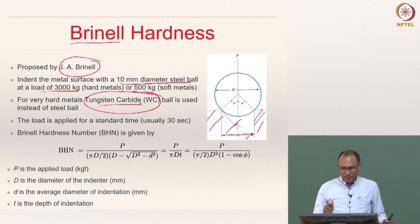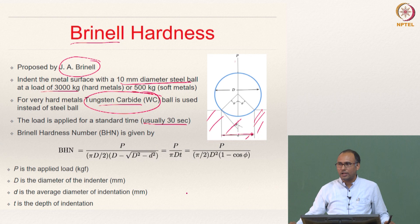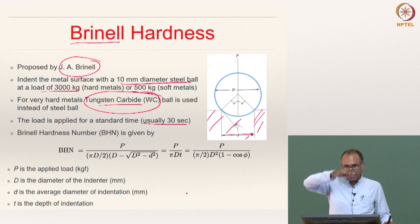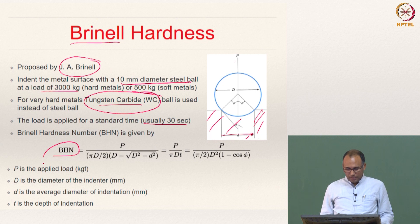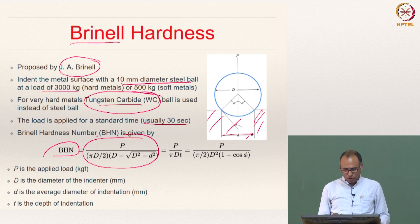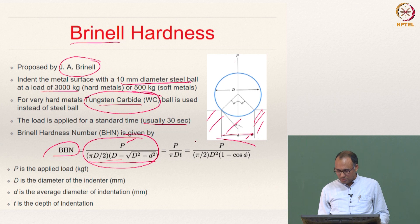Typically, the load is applied for a standard time — usually 30 seconds. You apply the load for 30 seconds only; beyond that, no load is applied. The load is applied gradually and then held at that particular value for 30 seconds. The Brinell hardness number, which represents the hardness of the material, is a stress measure — load divided by some area. This is the Brinell hardness number formula. If you know the angle phi and the diameter, you can calculate the Brinell hardness number.